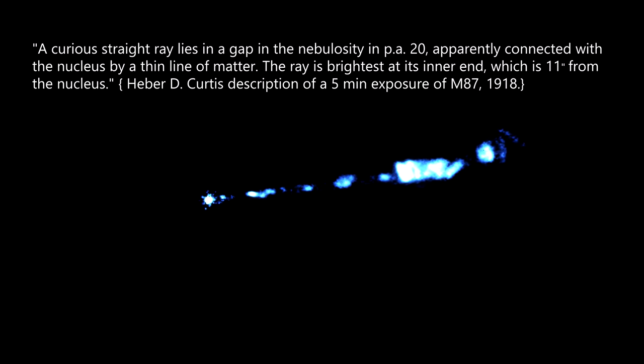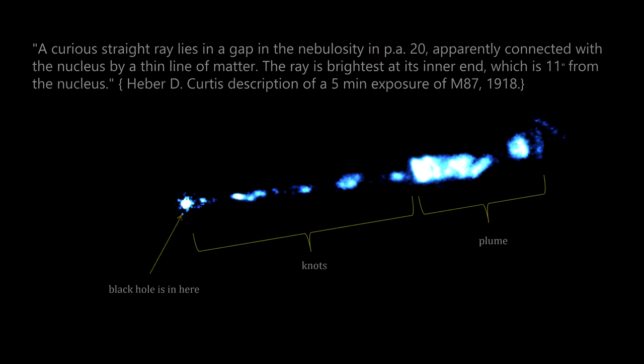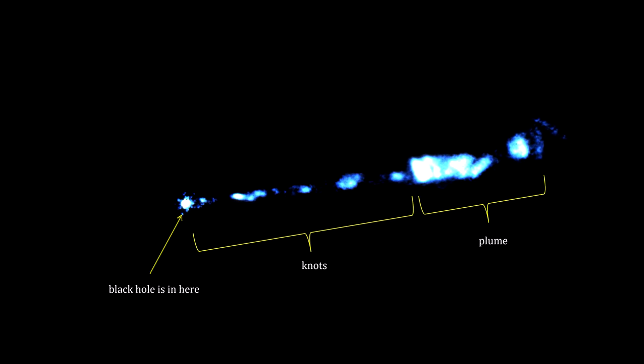Several things stand out about this jet. It's blue, it's very bright, it consists of chunks or knots, and it terminates in a plume. You may have also noted that there is no counter jet going out the other way, like we've seen in other galaxies.